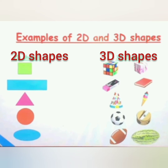Here you can see some examples of 2D shapes and 3D shapes and you can relate them. The first one is a square in 2D shape, and in 3D shape you may have a dice or a cube box. The next one is a rectangle in 2D shape, and an eraser and a notebook in 3D shape — this is a cuboidal shape.